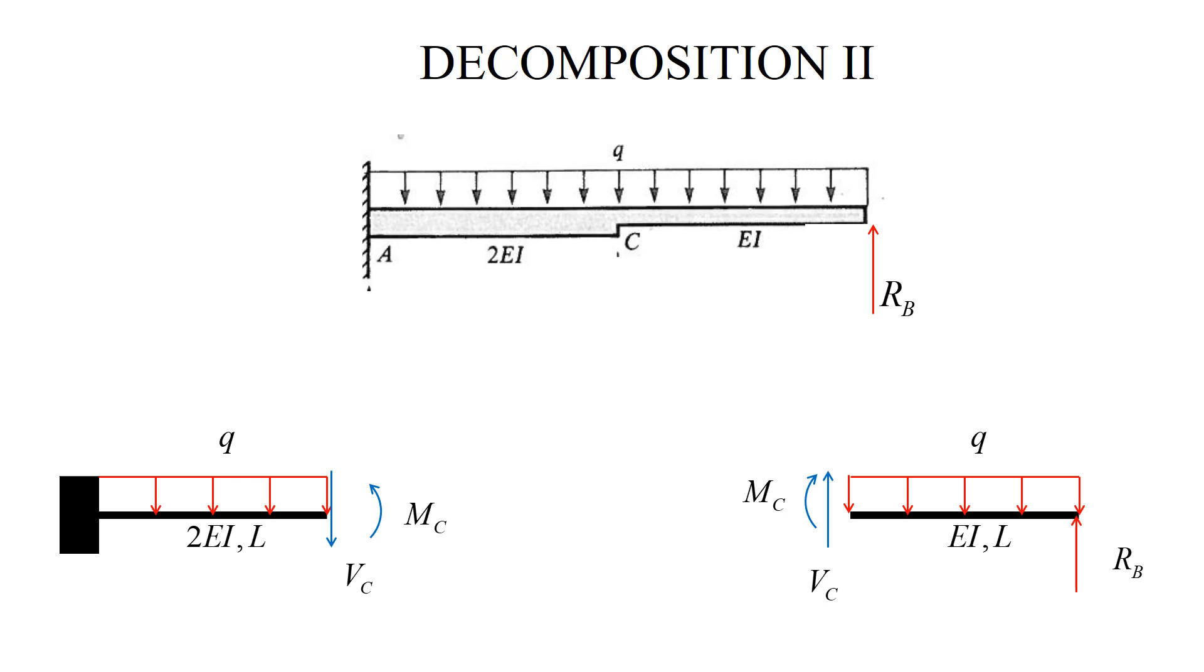To deal with non-uniformity, I simply cut this beam at C and this generates a free-body diagram of the right beam and also generates a cantilever beam. The shear force and bending moment are applied to both beams, and they are chosen consistent with the same convention, both of them chosen as positive.